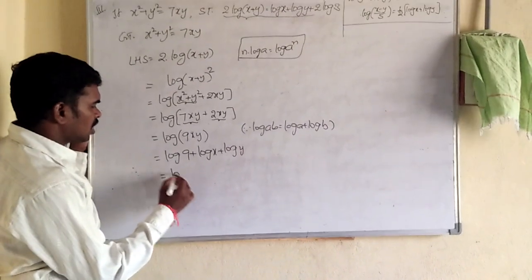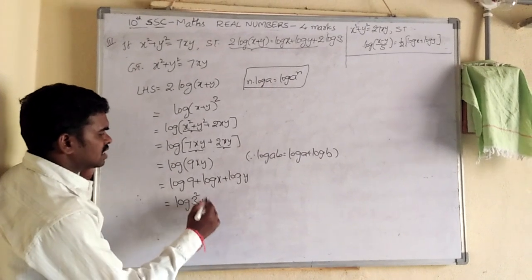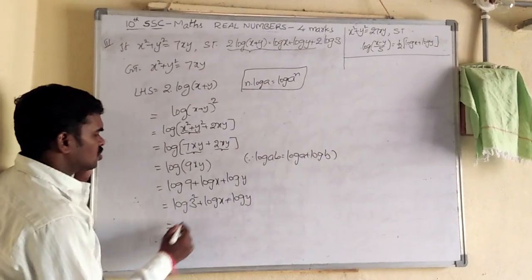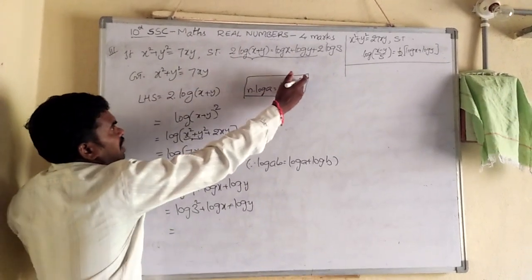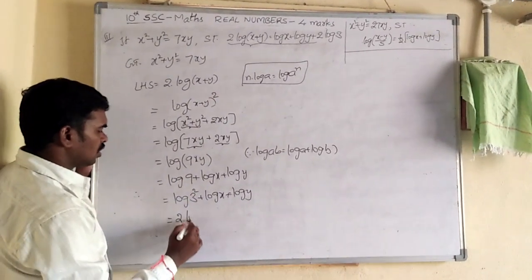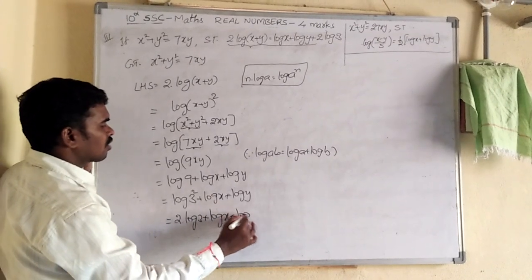So 9 means what? Again it is 3 square plus log x plus log y. So here, same first formula applied. Log a power n means n into log. Log 3 power 2 means 2 left side. 2 into log 3 plus log x plus log y.